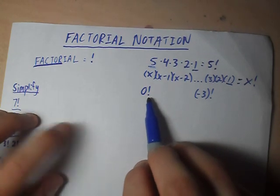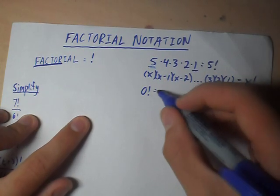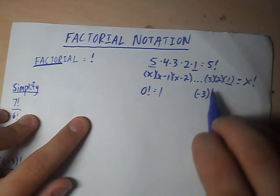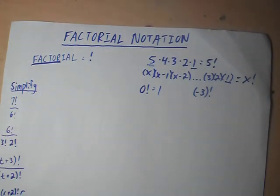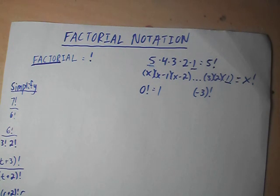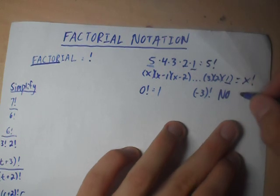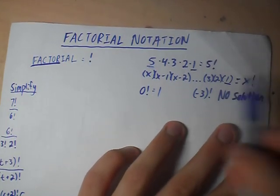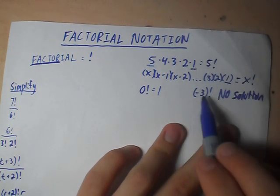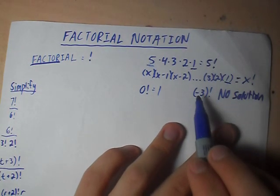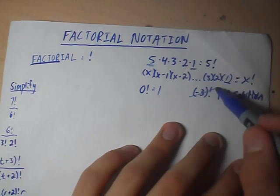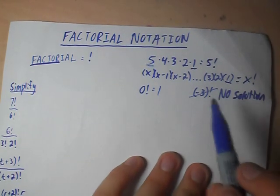An important thing to know about factorial: 0 factorial equals 1. And when you're doing the factorial of a negative number, you get no solution. Because, as stated earlier, you go all the way down to 1. If you're starting at a negative number, you're already less than 1 and it doesn't make sense. So you cannot take the factorial of a negative number.